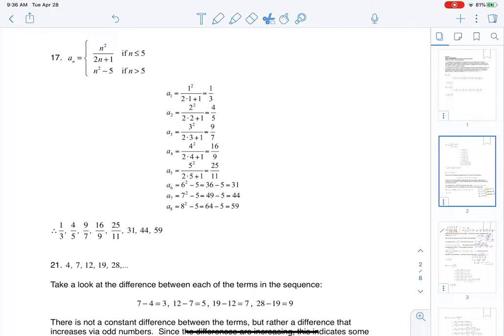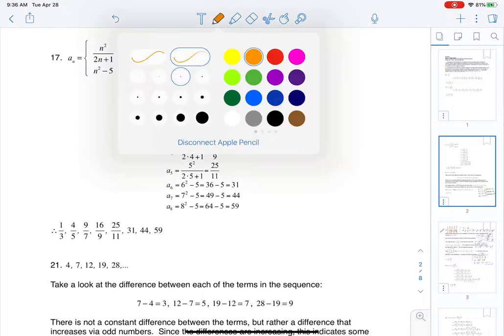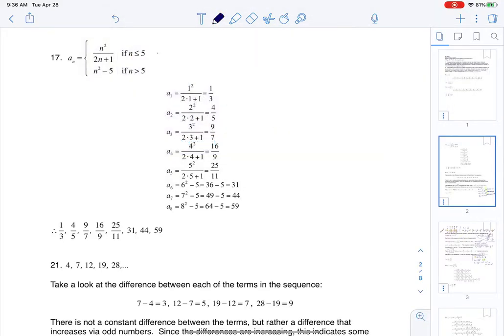Hey Math 31, I had a question coming out of section 9.1 number 17 where we were asked to write the first eight terms of this sequence. It's given to us in piecewise form, and how we read this is that the first five terms come from the top piece because it says n less than or equal to 5.